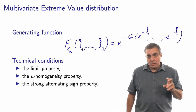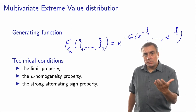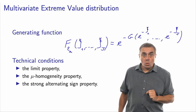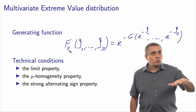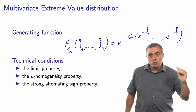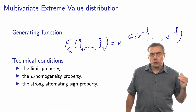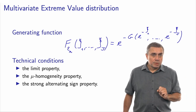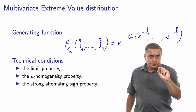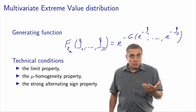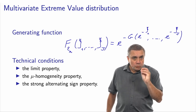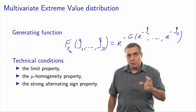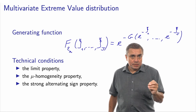In order to be a valid multivariate extreme value distribution, this capital G function must verify three properties. These properties are quite technical. The first is called the limit property. The second one is called the mu homogeneity property. And the third one is the strong alternating sign property. One thing which is important to keep in mind is that the homogeneity property is associated with a mu parameter, and this mu will play the exact same role as the scale parameter in the logit model.